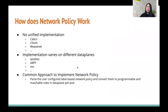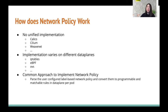Network policy is a Kubernetes v1 API, but it doesn't have a unified implementation. Instead, it is implemented by various CNI providers, including Calico, Cilium, WeaveNet, etc. The implementation can be based on different data planes, such as iptables, eBPF, OVS, and so on. The common approach is to parse the user-configured label-based network policy and convert them to programmable and matchable rules in the data plane per pod. The resulting policy rules could look quite different from what the user configured due to optimization and processing.